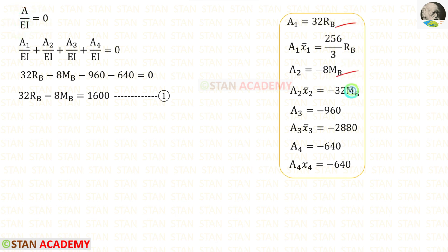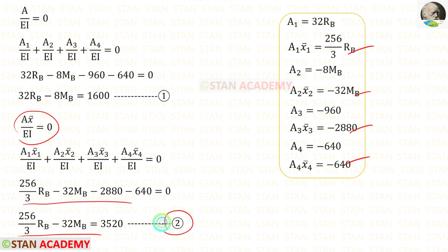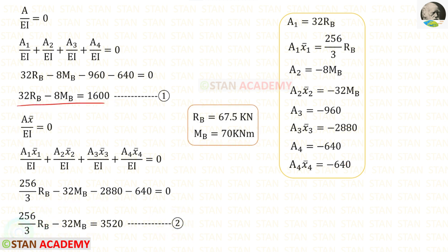Let us add all the area values and area × x̄ values. When we add them, they will each equal zero. Using that, we can form two equations. Let us keep the first as Equation 1 and the second as Equation 2. Now we can solve these two equations simultaneously to get RB and MB.